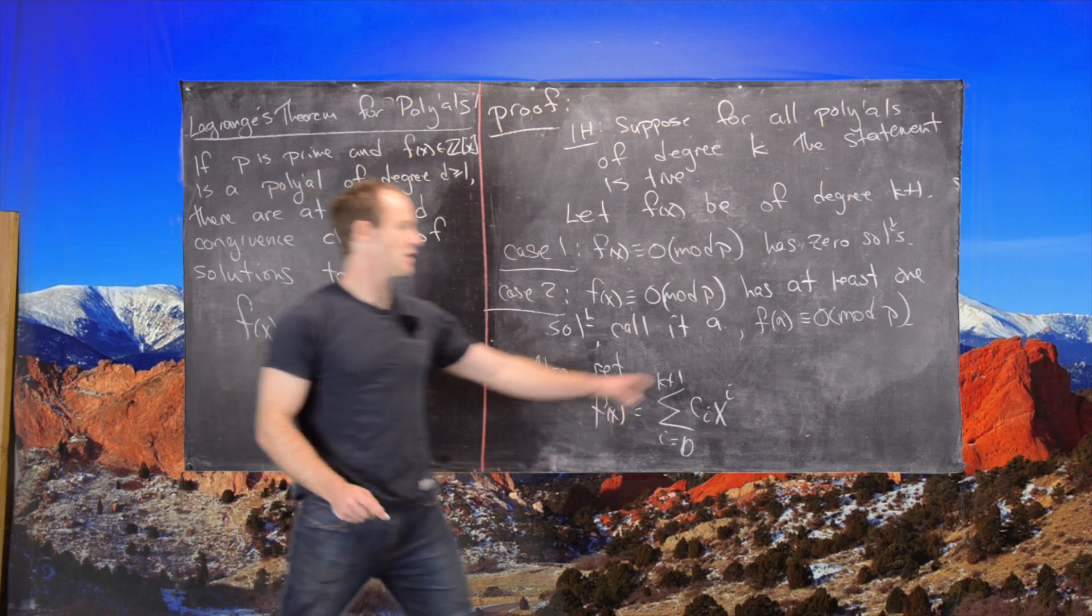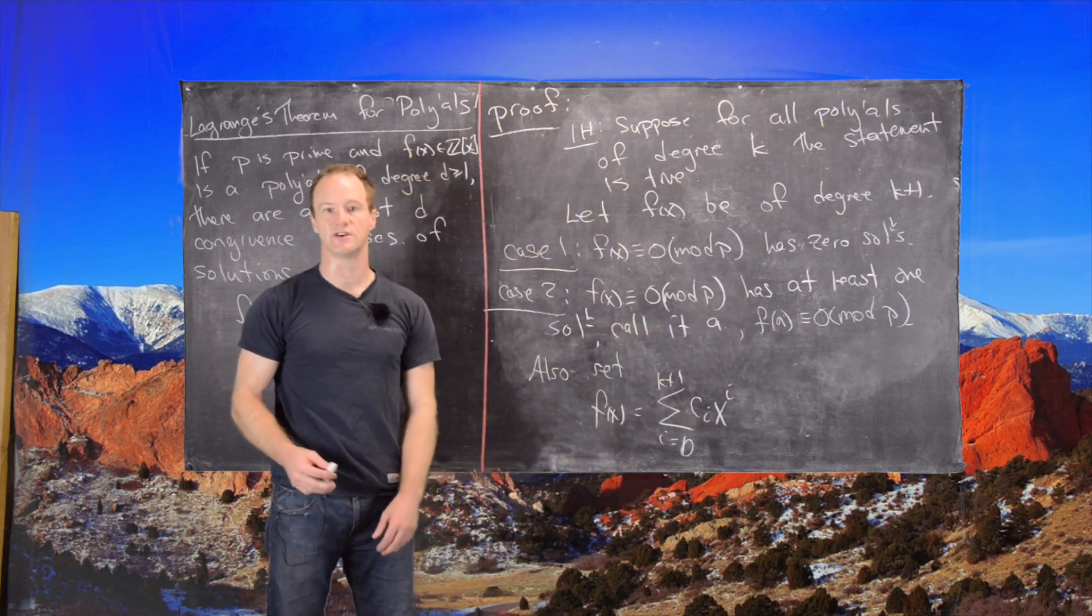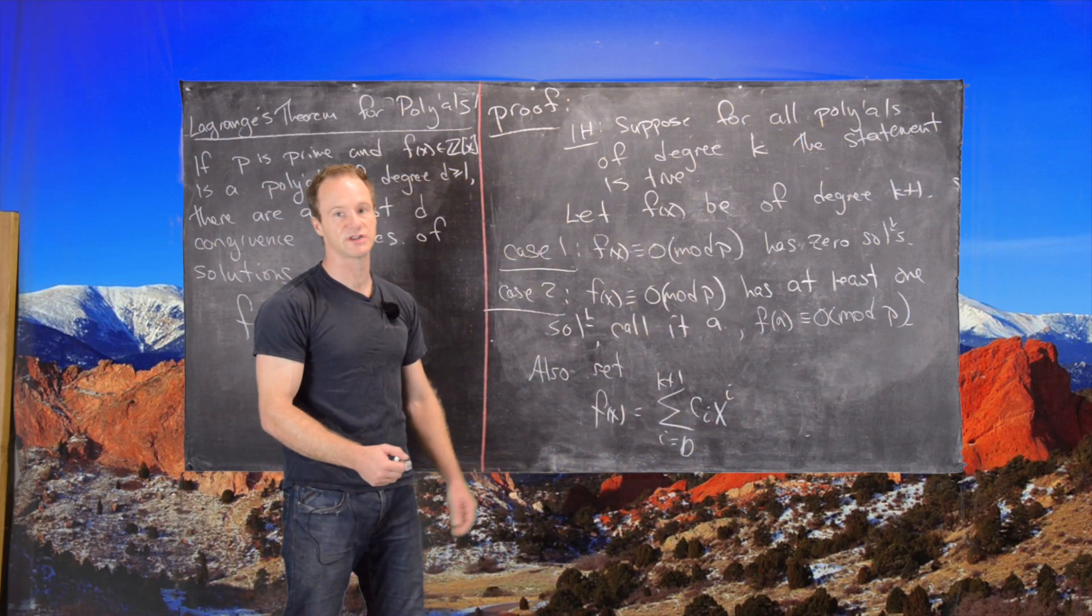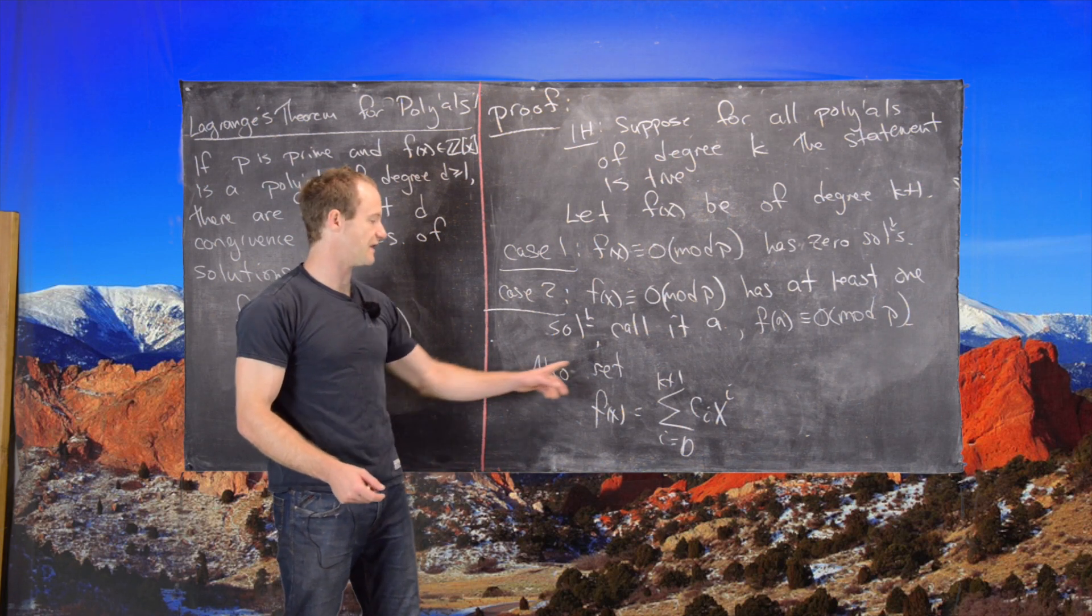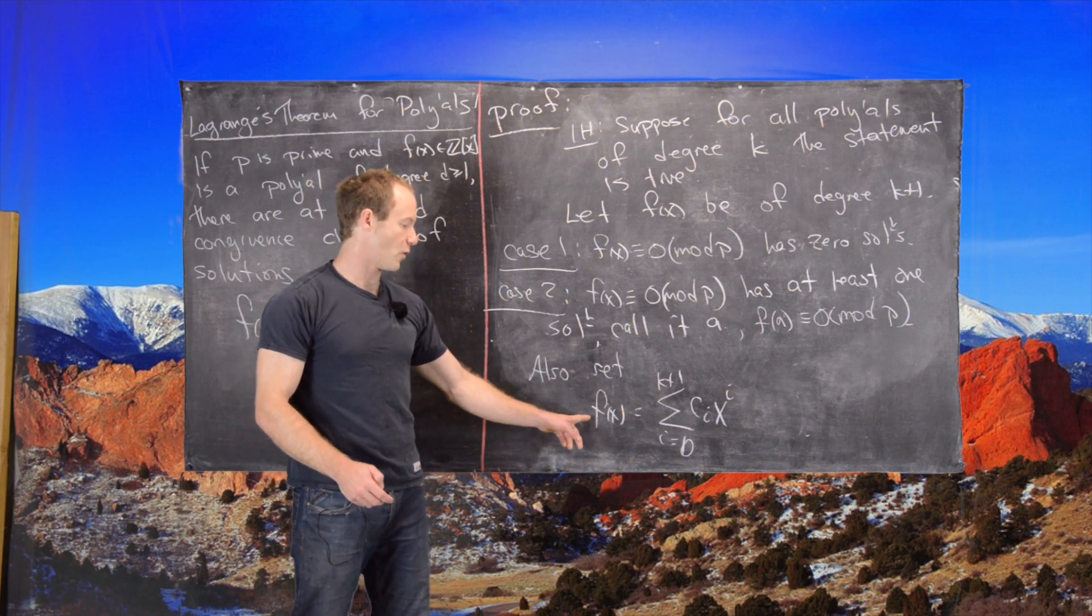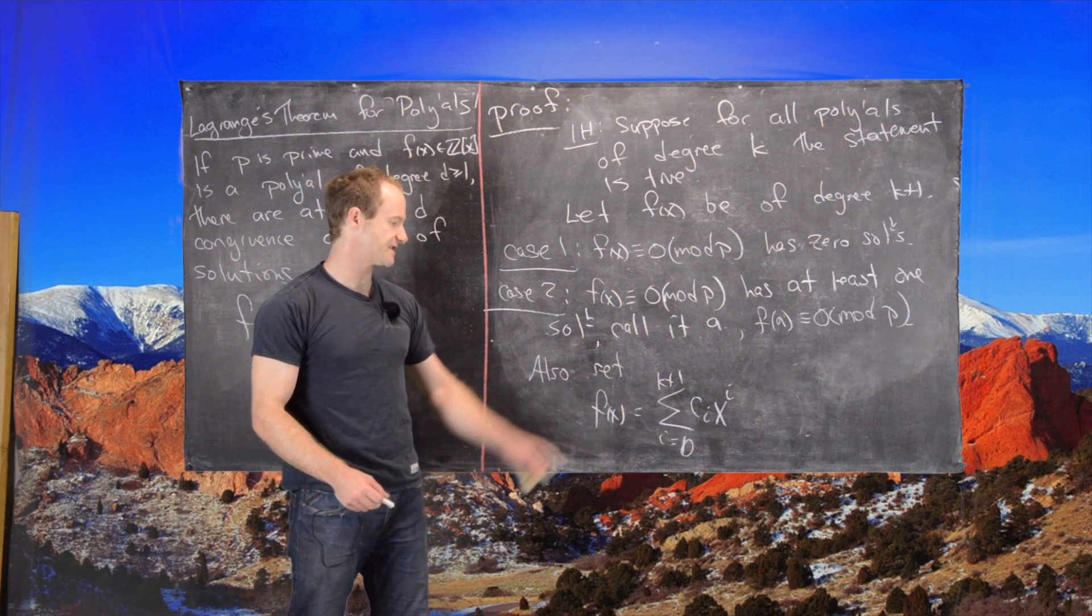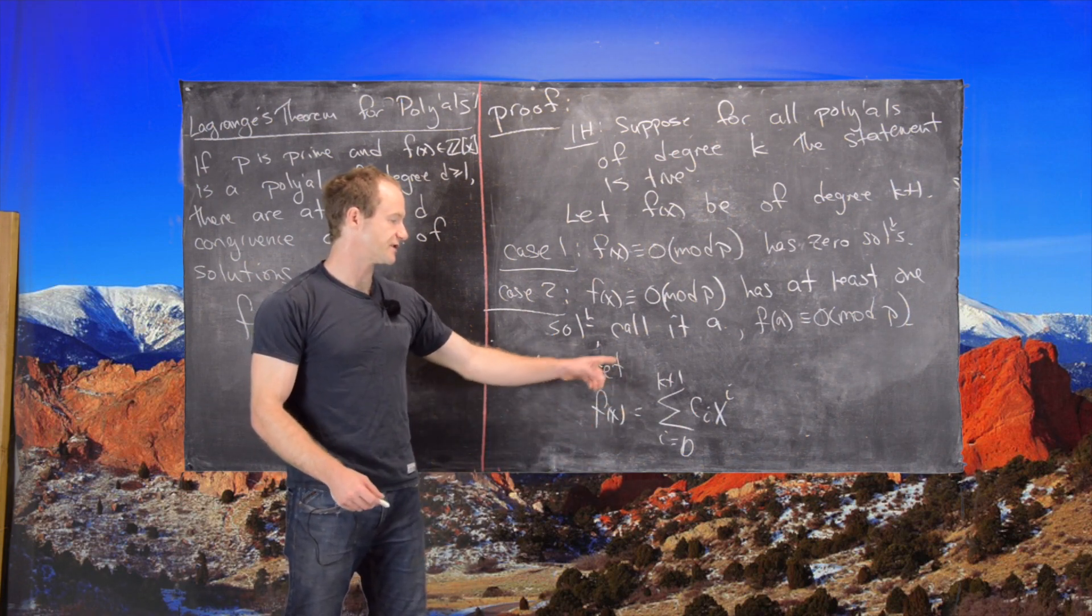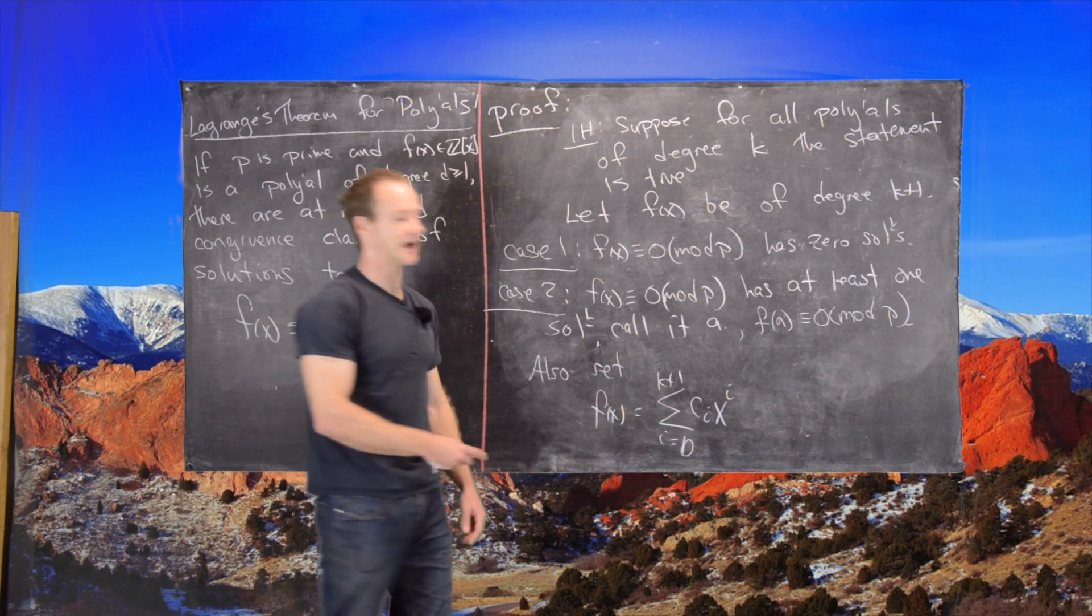Now we have this setup. We know F of A is congruent to 0 mod P because it is a solution to this polynomial congruence. And we've also made a form for F of X. F of X is the sum from I equals 0 to K plus 1 of C I, X to the I.